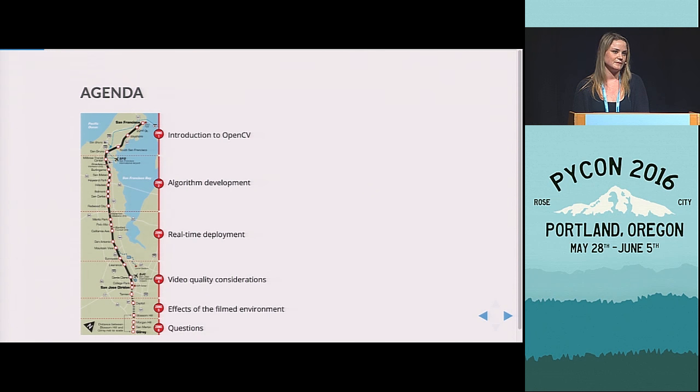And so what I'll go through today is an algorithm that I developed to detect whether a train is passing and in what direction it's going using video. So I'm going to talk about OpenCV, which is great for image processing in Python, go through the development of the algorithm, talk about real-time deployment, and then finish up with some comments on the effects of video quality and also the filmed environment.